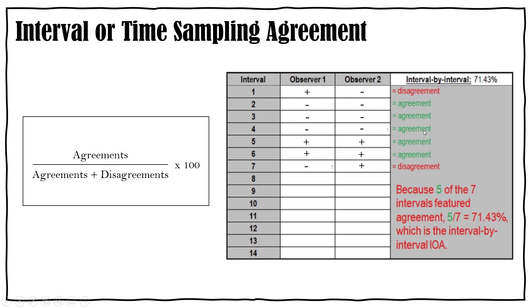So we had five agreements, one, two, three, four, five, over seven, seven total intervals, which gave us 71.43% IOA. This would not be sufficient because remember we need 80% or more. So we would either need to go back in there, either record the behavior and do some training watching it, or go back and look at our behavioral definition and make sure that we are recording the same behavior.